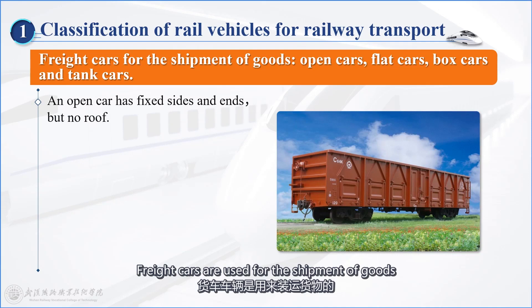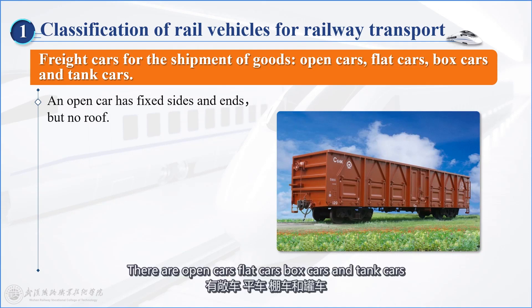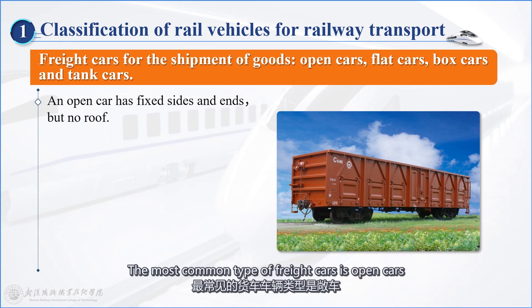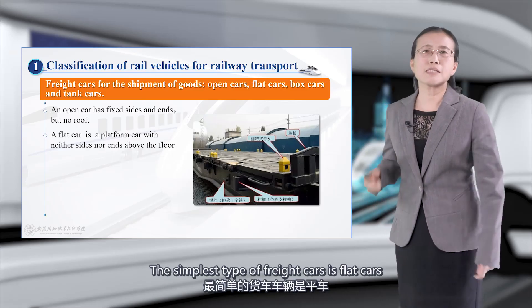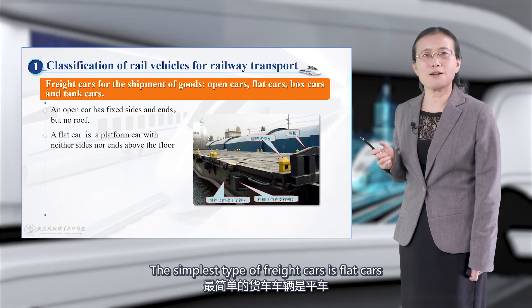Freight cars are used for the shipment of goods. There are open cars, flat cars, box cars, and tank cars. The most common type of freight cars is open cars, which have fixed sides and ends but no roof. The simplest type of freight cars is flat cars.